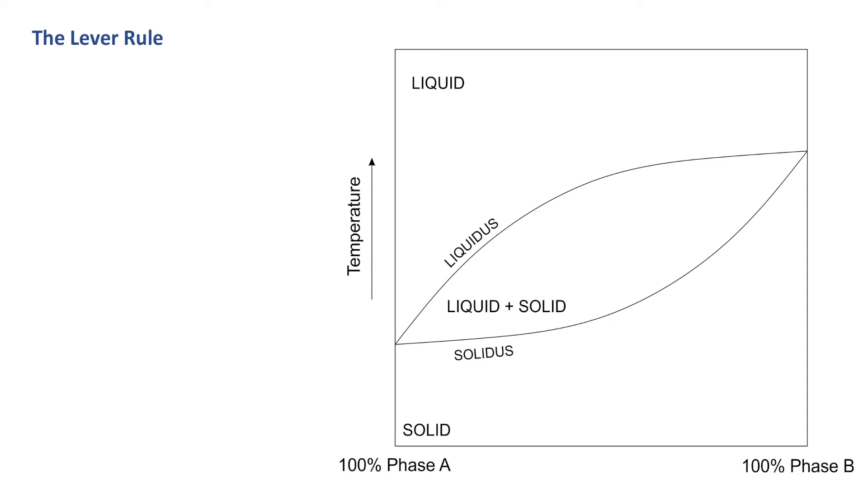Picture a point existing here. If we think back to Gibbs phase rule, that is currently a divariant field, meaning we have to define the temperature and the composition. We have to define the temperature by there and then the composition by there. Let's say that's around 75% phase B, 25% phase A. As the temperature cools, our point is essentially going to sit on our liquidus, and at the point of the liquidus it means a solid must be being created. The solid being created is going to be 100% phase B.